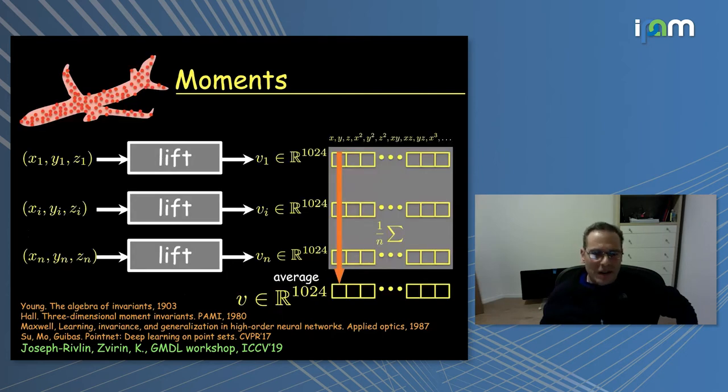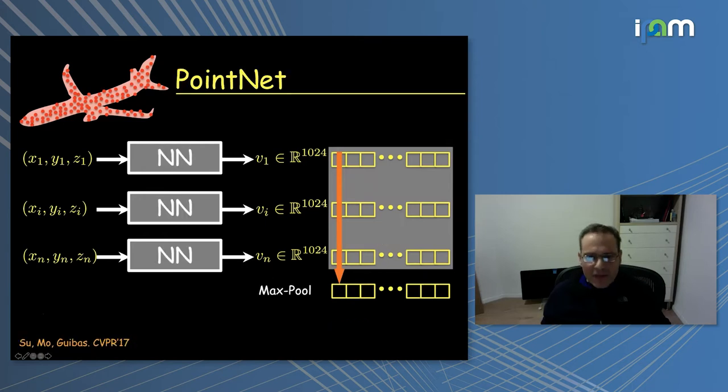Let me write this idea of moments in a different fashion. Assume you have your x, y, and z coordinates for each point. Then you lift it into a thousand-dimensional space. These are the coordinates of this high-dimensional space for each point, and then you average along each axis. The center of mass would be the average of the first three. This would be the first of the moments, then you have the higher-order moments. This is a way of representing how you compute moments from a simple object, then you can use this vector to classify your shapes.